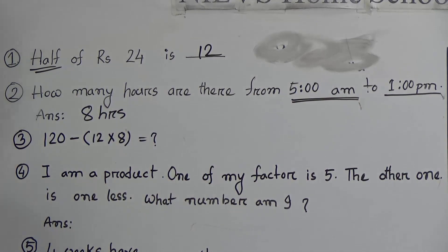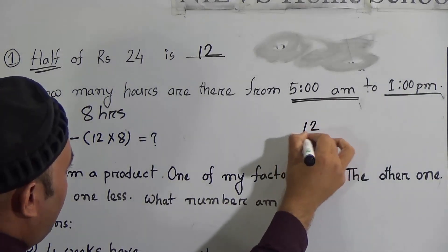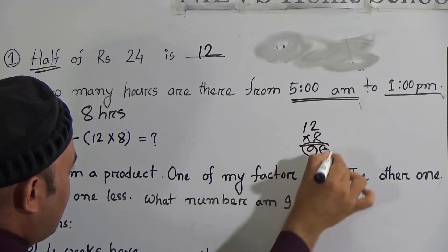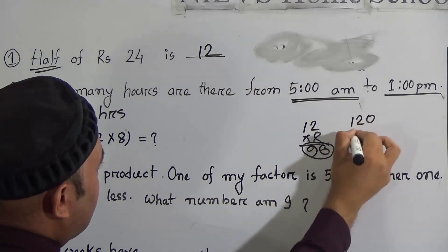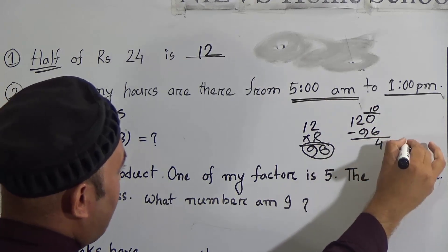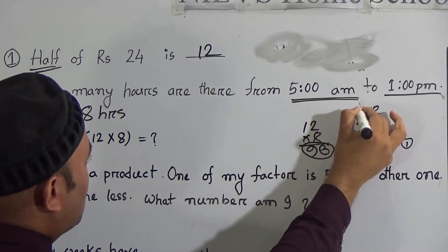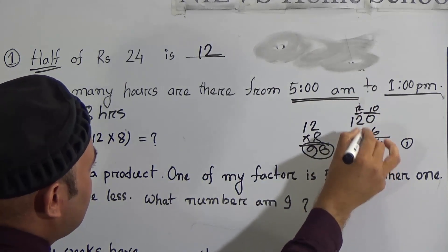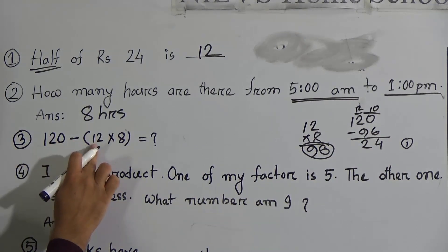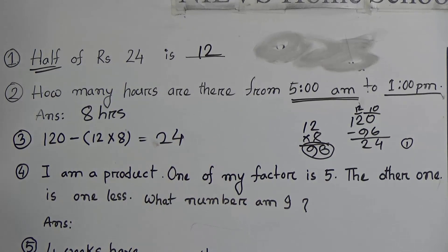Next: 120 minus 12 multiplied by 8. First you have to multiply 12 by 8: 8 twos are 16, carry 1; 8 ones are 8, plus 1 is 9 — so 12 times 8 equals 96. Now 120 subtract 96: 6 from 0, borrow to get 10, 6 from 10 is 4; then 9 plus carry 1 is 10, 10 from 12 is 2. So 120 minus 96 equals 24. The answer is 24.